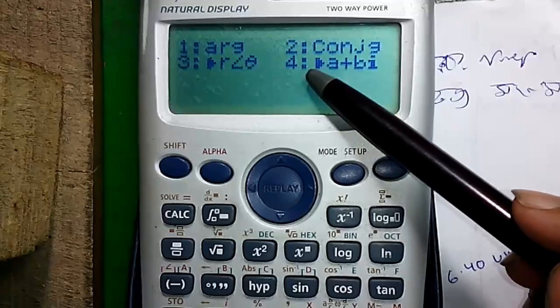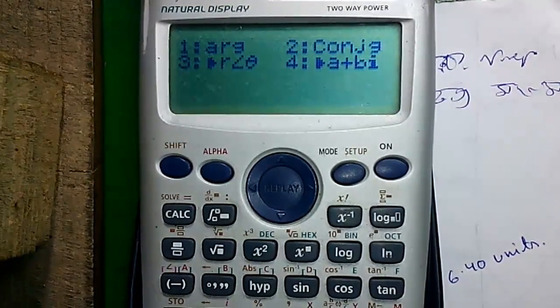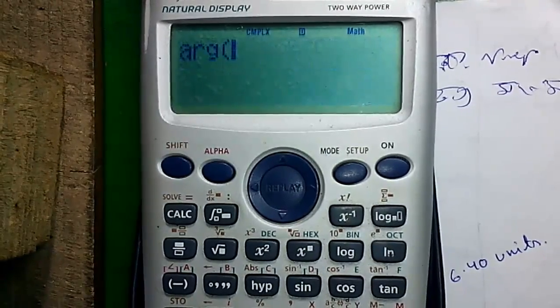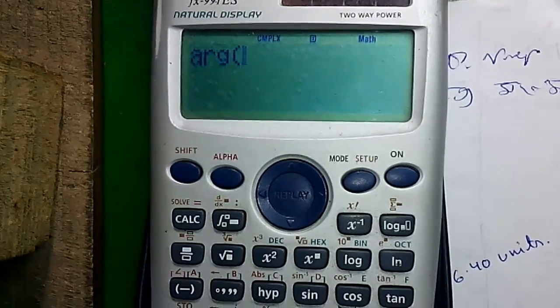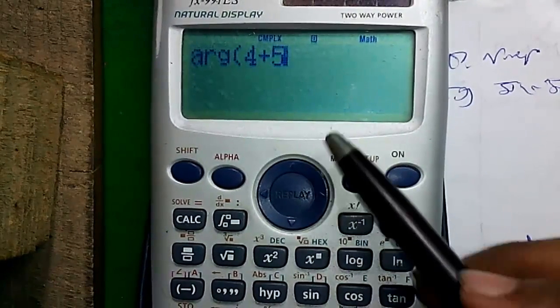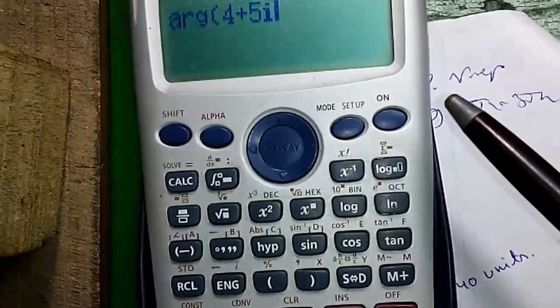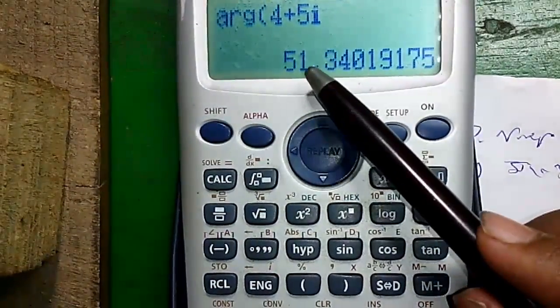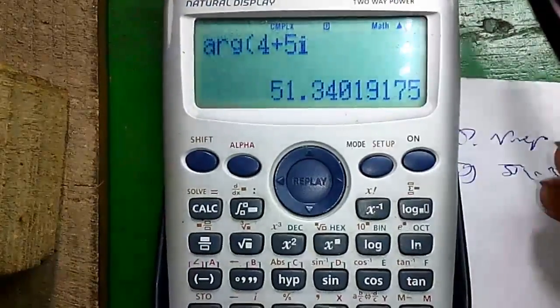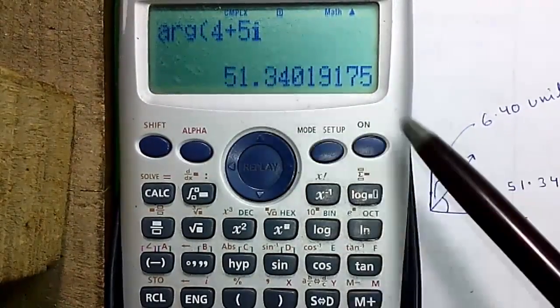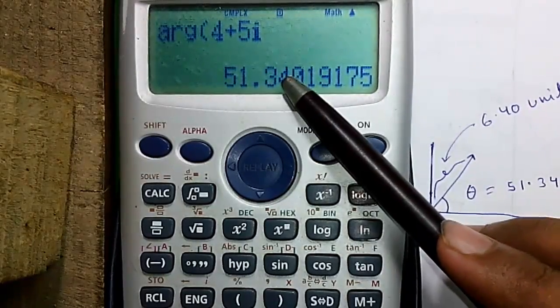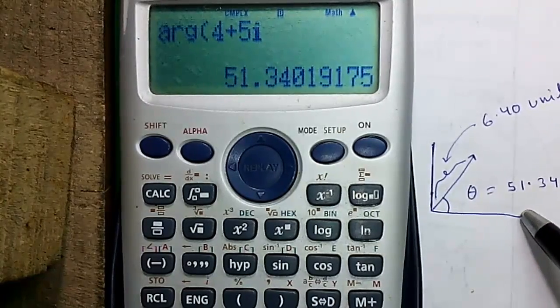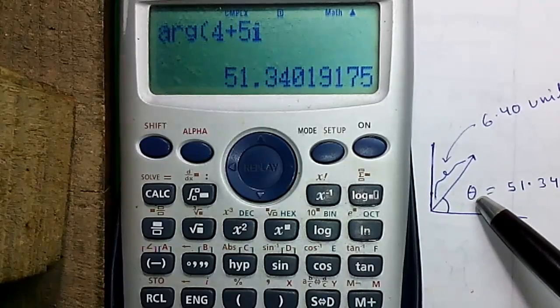So first let's start with argument mode. Press 1 for that and let's enter a complex number. To get the i, press shift and the i button, then press equals. That is 51.34. See, if you draw this complex number 4+5i, this 51.34 represents the angle this component makes with the ground or the base, which is represented by θ. So θ equals 51.34, that is the argument value.